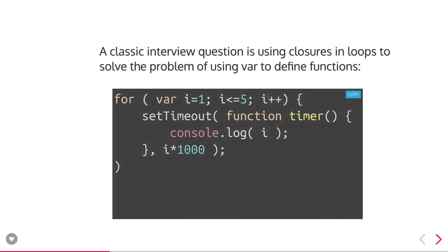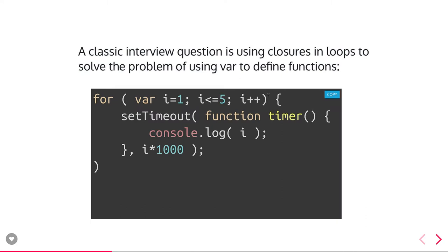This is the classic simple interview question: what will be the output of this particular loop? Most of the time people misunderstand this question and in a hurry they start writing the answer and always end up writing the wrong answer. This is a synchronous loop and inside it you are running asynchronous code, so the loop variable 'i' will reach the value of five. But your setTimeout is still going to execute, and in that case you will get all values as five.